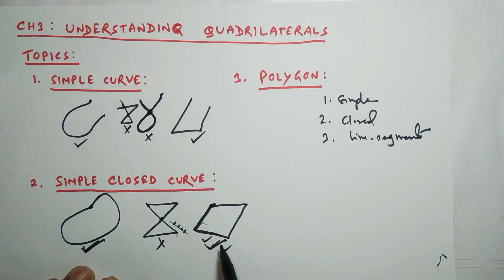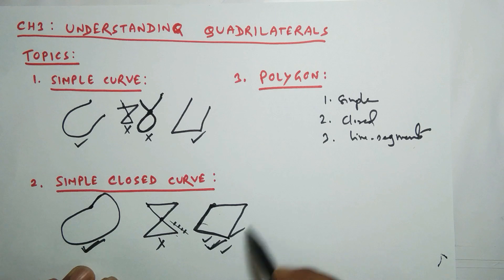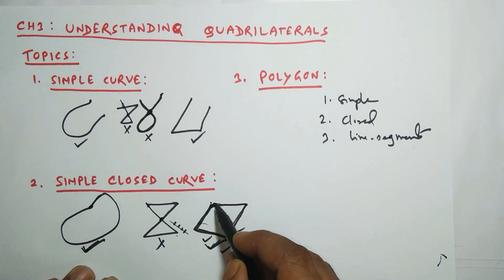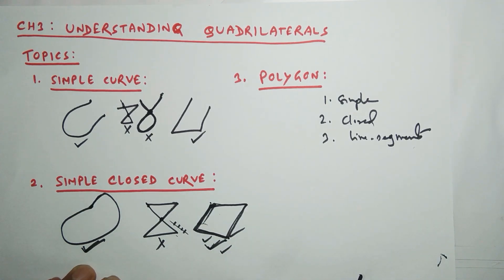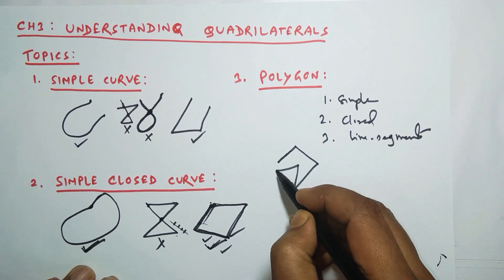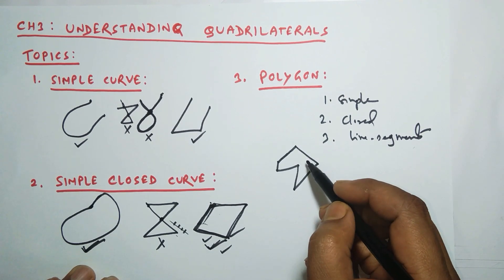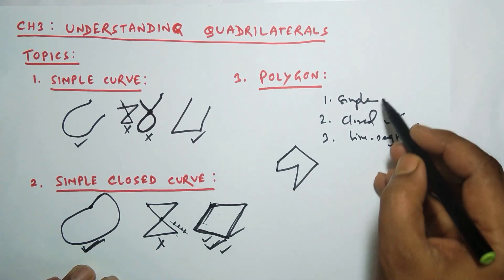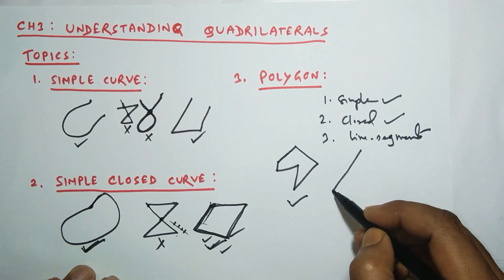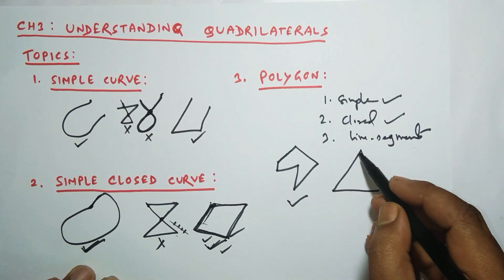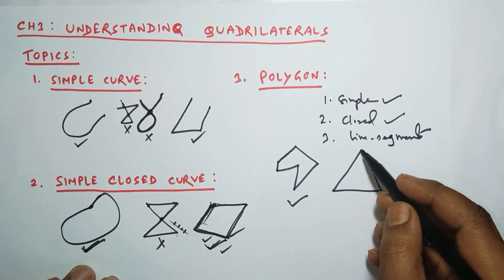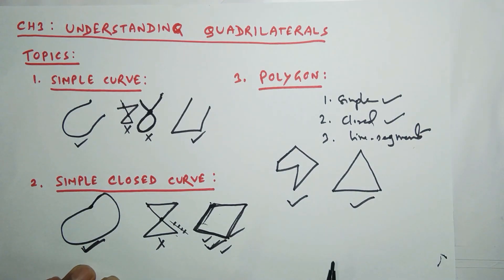If these three conditions are satisfied then it is a polygon. Look at this shape — it is simple because it is nowhere intersected, it is closed because the starting and end points meet, and it is made of line segments, so this is a polygon. Similarly, a triangle is simple, closed, and entirely made of line segments, so a triangle is also a polygon.